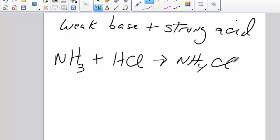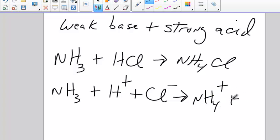In terms of a net ionic though, this Cl- is going to end up being my spectator. I'm going to have NH3 plus H+, plus Cl-. Because strong things completely dissociate. Gives me NH4+, plus Cl-. Because ionic things completely dissociate. Cl- ends up being my spectator ion.